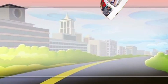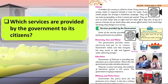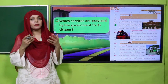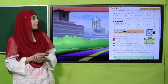In the next lecture, we discussed which services are provided by the government to its citizens. We learned that the government provides electricity, gas, water, education, military, police force, healthcare, transportation system, and waste management. These are all the different services that are provided by the government to its citizens.